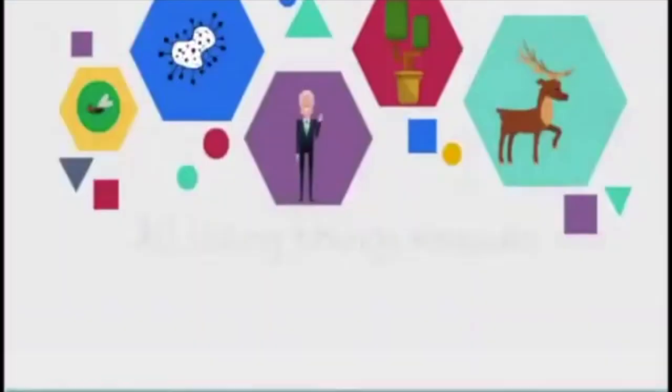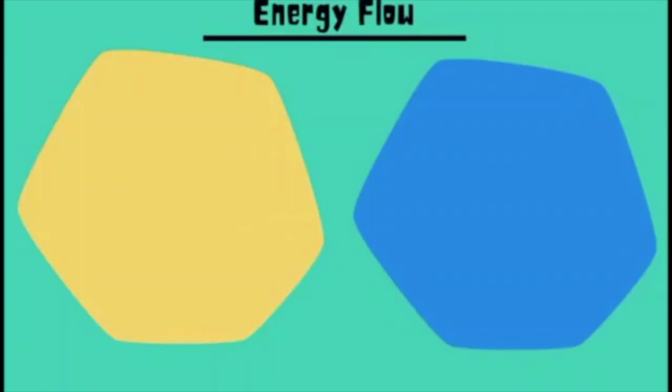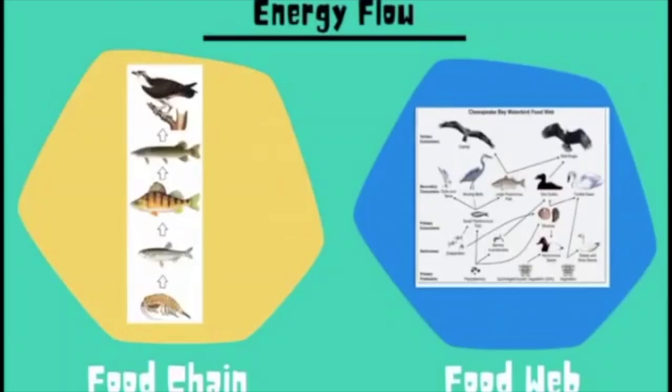First we'll talk about trophic levels. All living things require energy in order to stay alive. There are different models used to show the flow of energy. The most common models are food chain and food webs, and we'll talk about each one in more detail. In an ecosystem, energy flows from producers to consumers and then to decomposers.